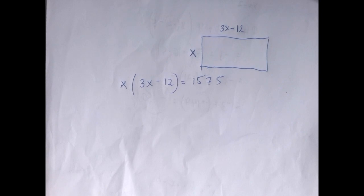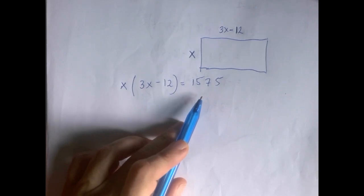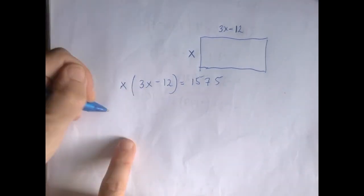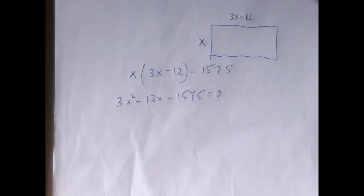Because the equation is quadratic, we're going to multiply out this parenthesis, reduce this side to zero, and then factor and apply the zero product rule. So we have 3x squared minus 12x minus 1575 equals zero.